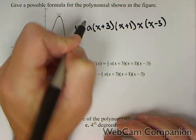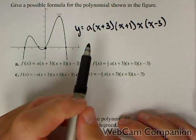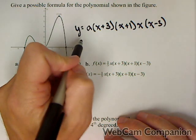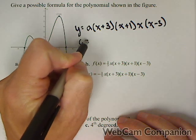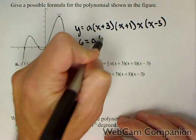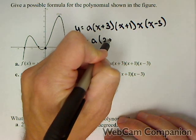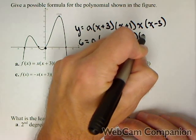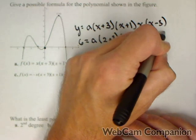So what we'll do is we'll put a factor of a out here, and we're going to solve for a by plugging in two for x and six for y. So six equals a times, we're going to plug in two for all our x's. Two plus three times two plus one times two times two minus three.